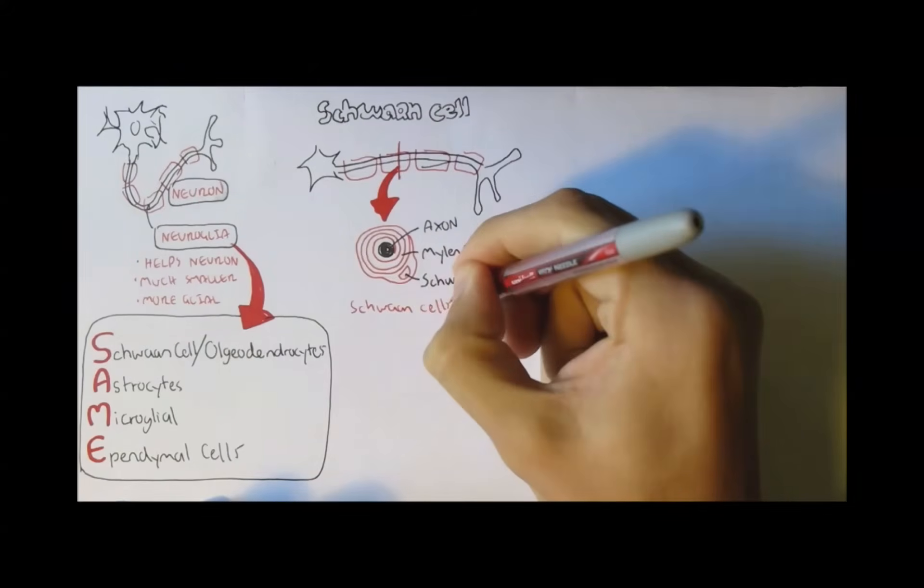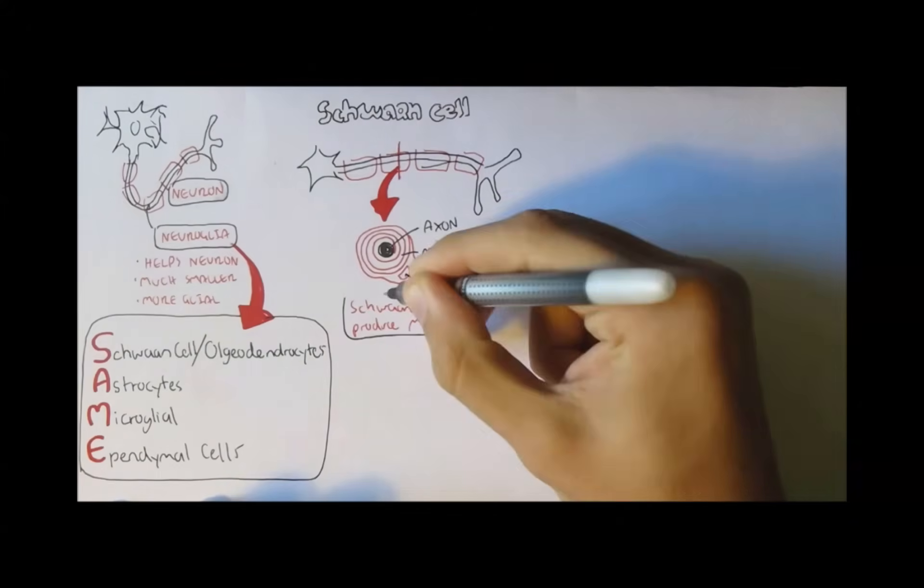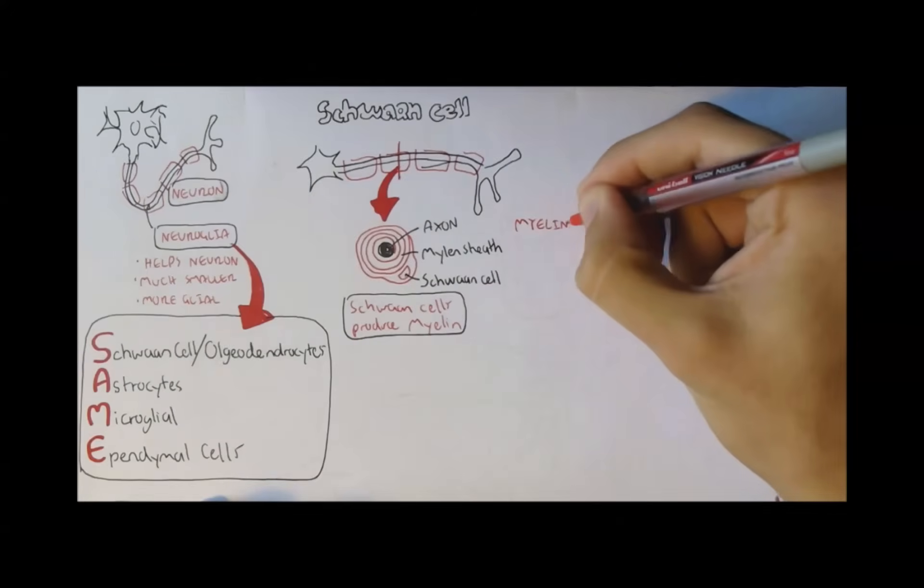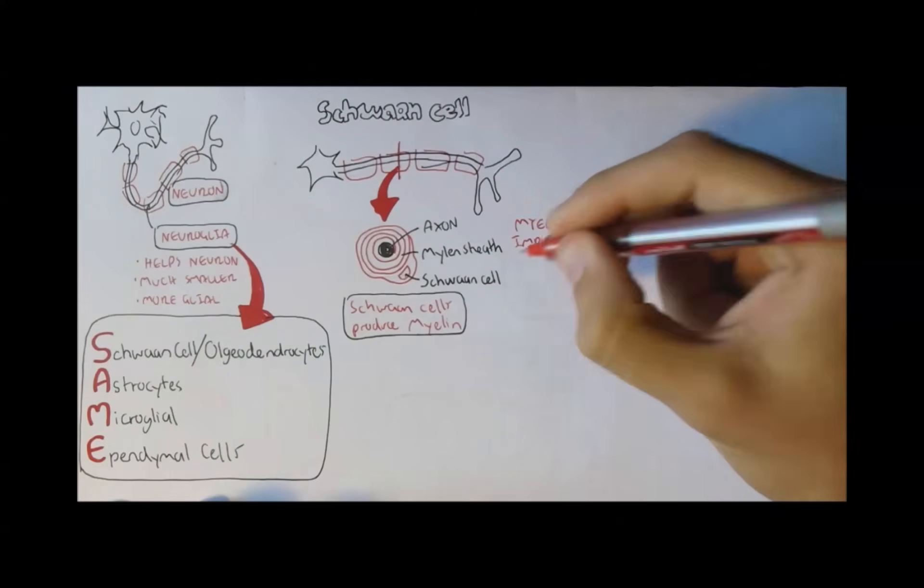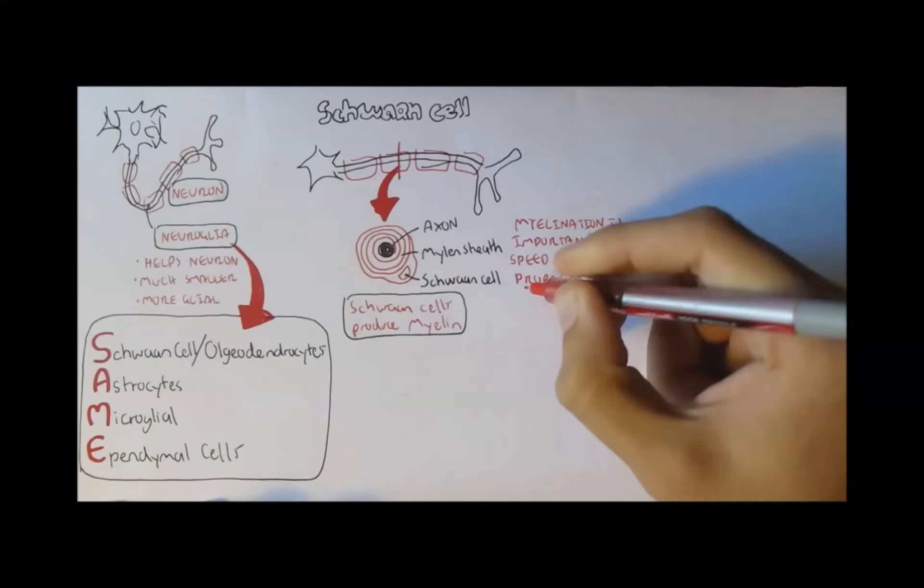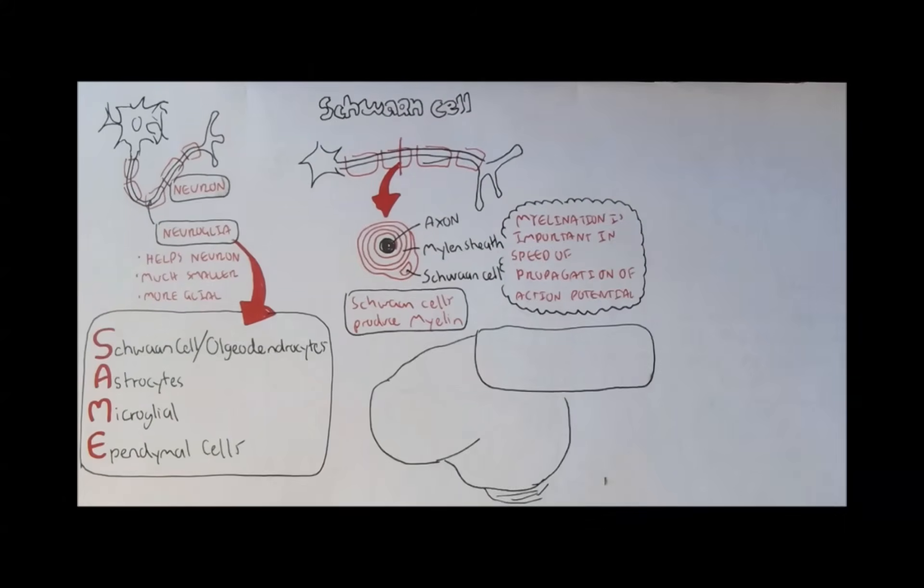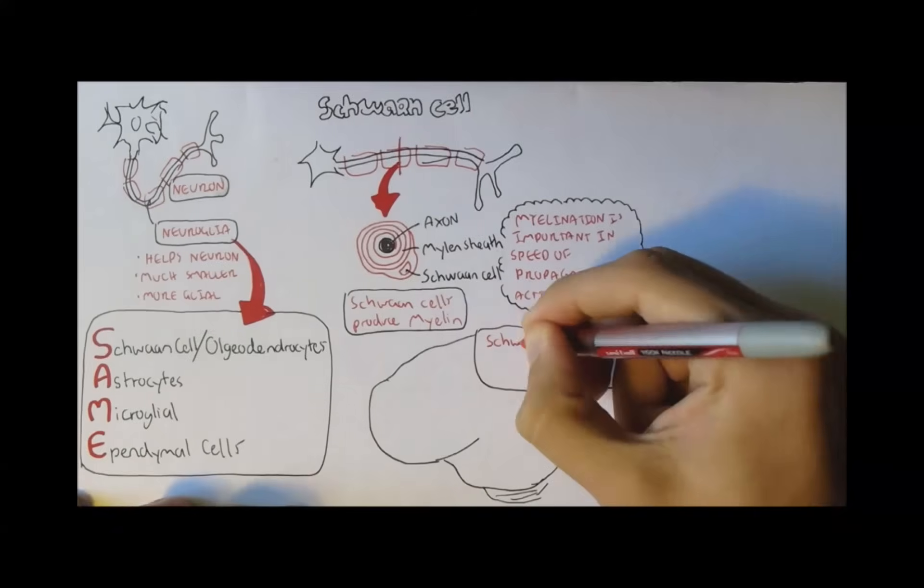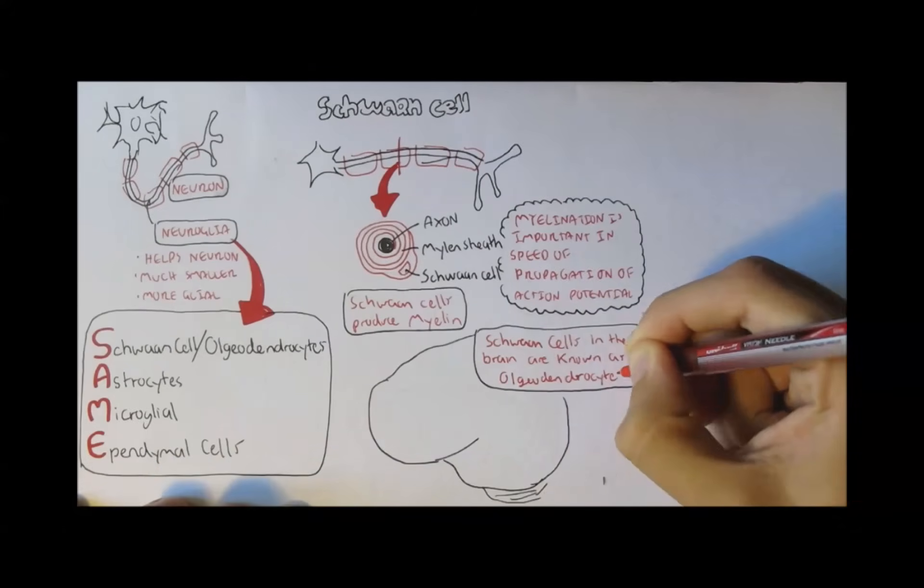Myelination is important in the speed and propagation of an action potential, an impulse. Schwann cells found in the brain are referred to or known as oligodendrocytes. That is the only difference.